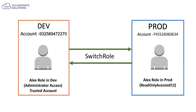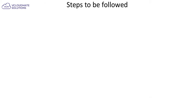In order to achieve that, we can identify that there are two different accounts — dev and production — with two different account IDs. There should be a bridge established between the development and production accounts. I call the one I log into the trusted account, and the other side is the trusting account where I'll assume the role. To get things done, we need to follow the following steps.